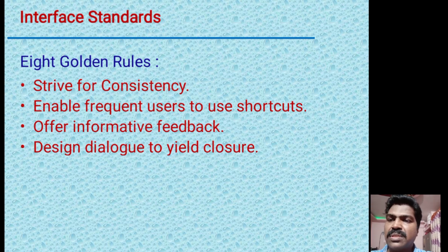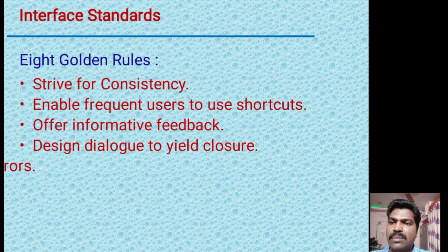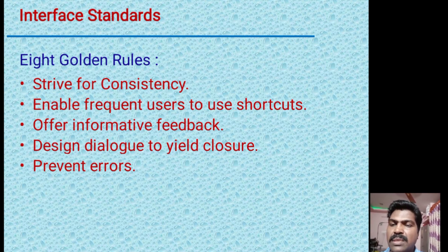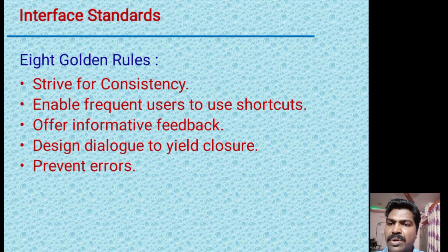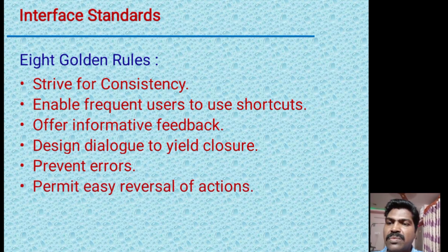The next golden rule is prevent errors. For example, if you are entering a user ID and password and you enter them incorrectly, the system should give you a message that you have entered a wrong user ID and password so you can understand the mistake and then enter the correct credentials. In this way, errors are prevented.